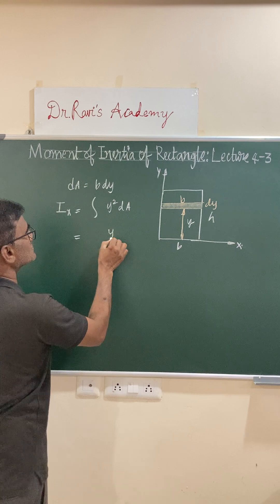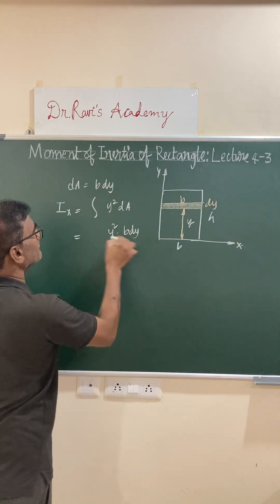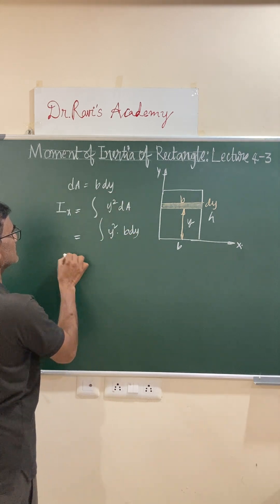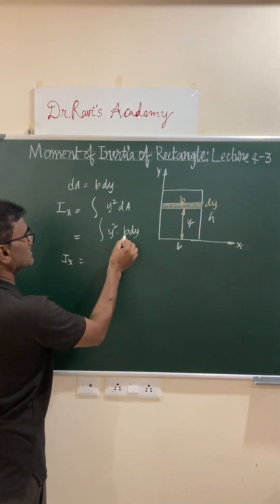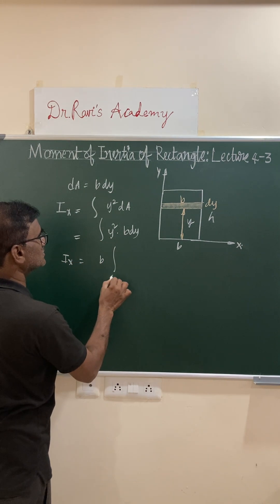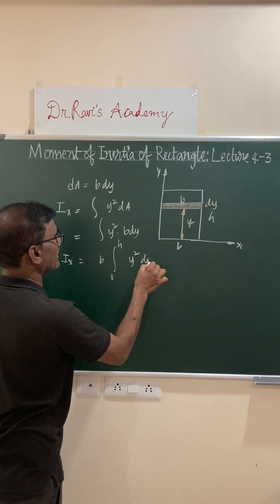So y square dA is b dy, and Ix is equal to b (you can keep b outside the integral), from 0 to h: integral of y square dy.